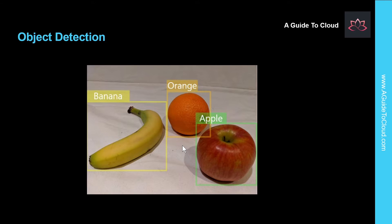Object detection is a form of machine learning-based computer vision in which a model is trained to recognize individual types of objects in an image and to identify their location in the image. Creating an object detection solution with custom vision consists of three main tasks: first, you must upload and tag images; then you train the model; and finally you must publish the model so that client applications can use it to locate objects in images.